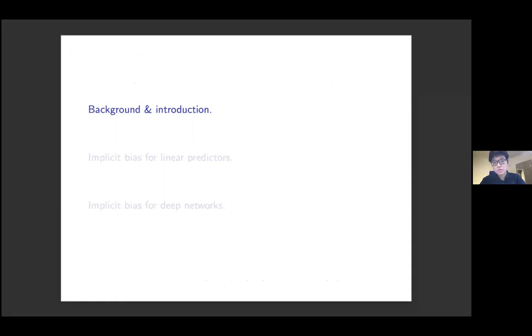Even though these two settings look quite different, the two analyses are linked by a common new proof technique which uses the dual perspective. Therefore our new dual proof technique could be very useful in the analysis of implicit bias. Next I will introduce the background and then discuss implicit bias for linear predictors and deep networks respectively.